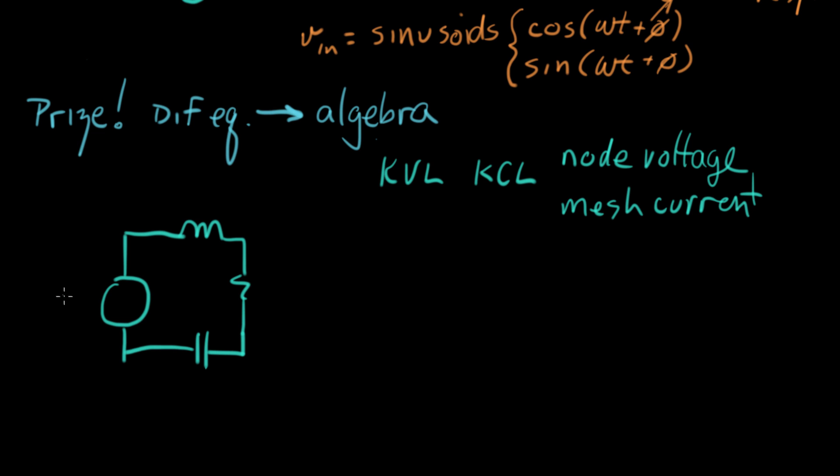So for V in we're going to limit ourselves to just sinusoids. So that means that the input is going to look something like A cosine omega t plus phi. Phi is a phase angle.